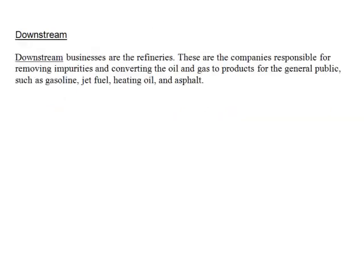The last type is downstream industry. Downstream businesses are the refineries — companies responsible for removing impurities and converting oil and gas to products for the general public, such as gasoline, jet fuel, heating oil, and asphalt.